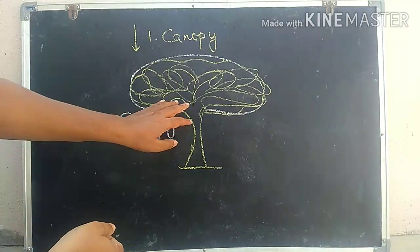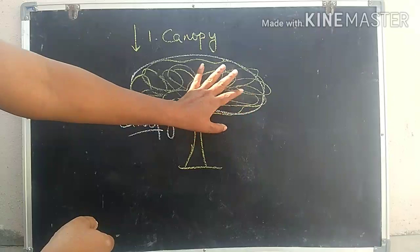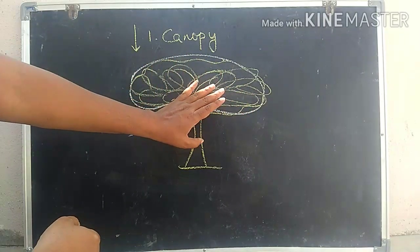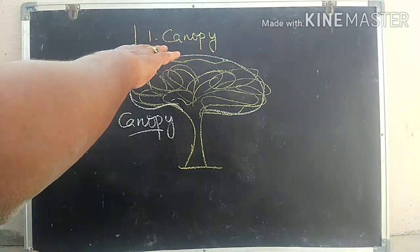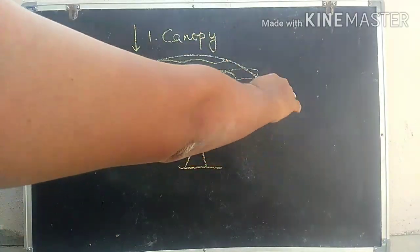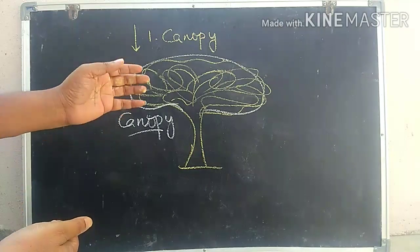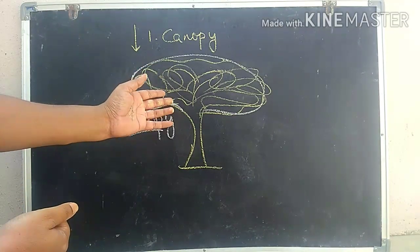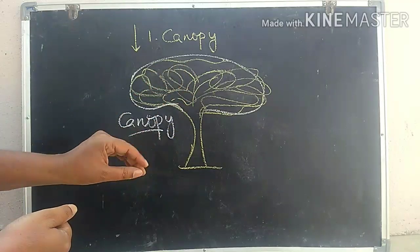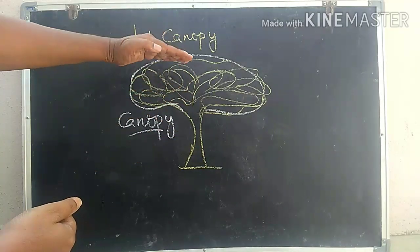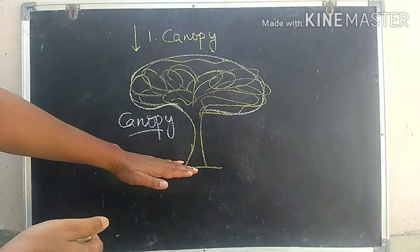The canopy is formed by the branches, leaves, and stems of the crown of the plants. These crowns form a roof-like structure on the surface of the forest. The canopy is the highest layer in the vegetation in a forest ecosystem.